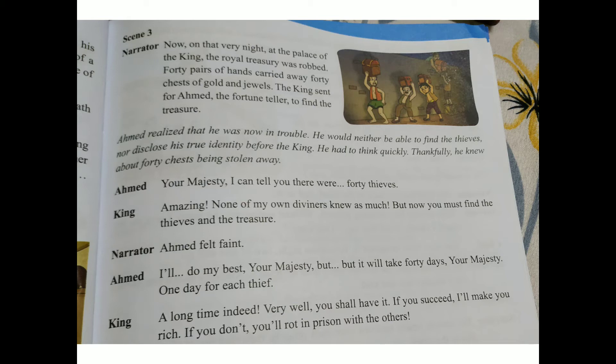Narrator: Ahmed felt faint. Ahmed said: 'I will do my best, your majesty, but it will take forty days — one day for each thief.' He requested forty days' time from the king.